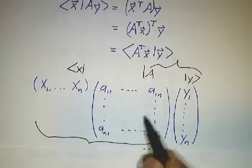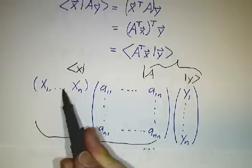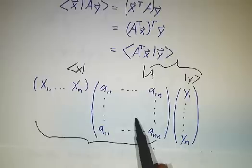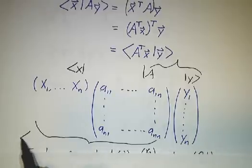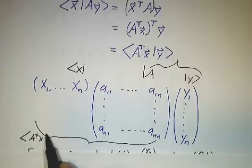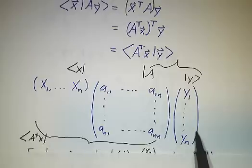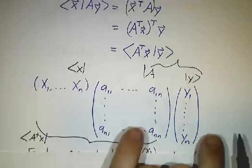You can take the row that you get when you multiply this row by this matrix and then multiply that by y. And this is A-dagger x, and that inner product with y is the same thing as x inner product with Ay.